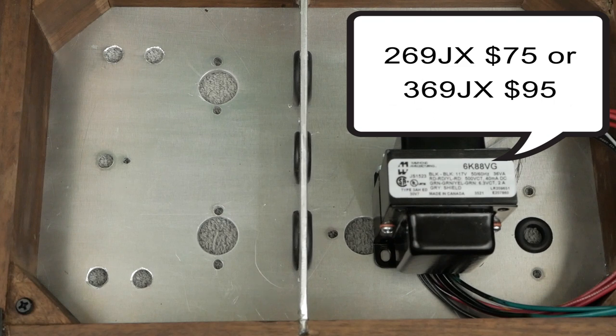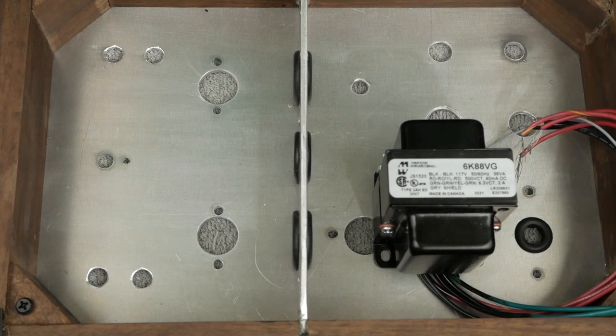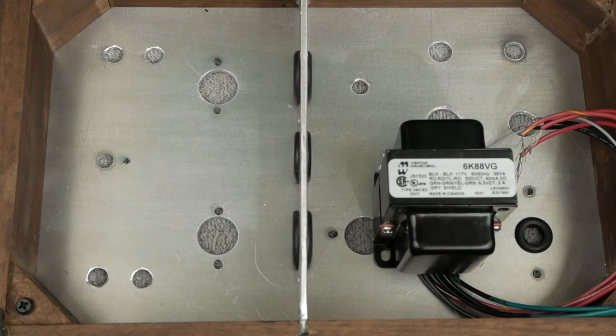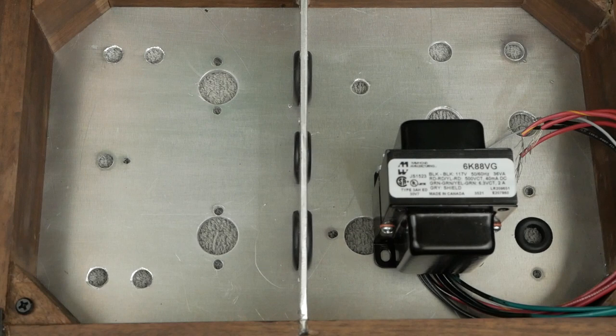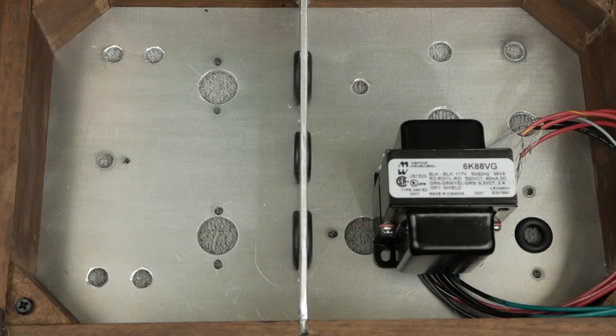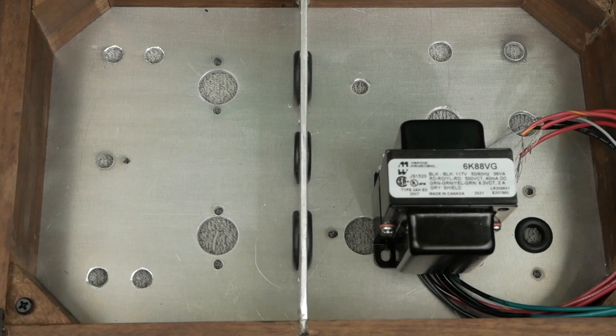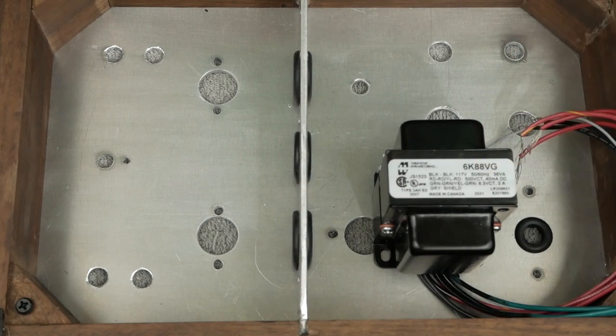This appears to be Hammond's replacement or the closest one currently available. It's got the 6.3 volt we need, 500 volts center tapped which will get us our 300 volts for the plate. It's got a ground shield which helps for noise. It's also 40 milliamps and that's plenty for running these input tubes.